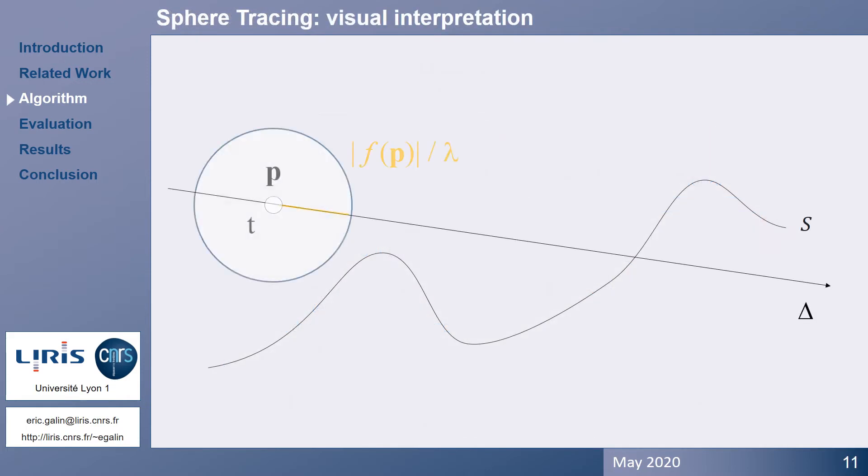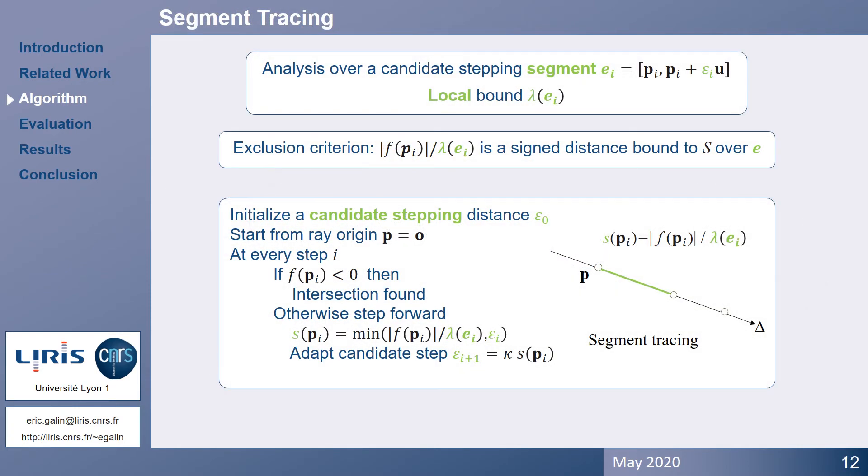Here is a short animation of sphere tracing that shows how steps adapt according to the scalar field values. In contrast, segment tracing performs as follows.